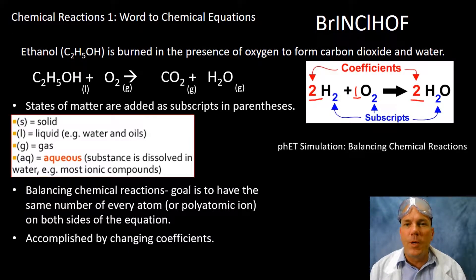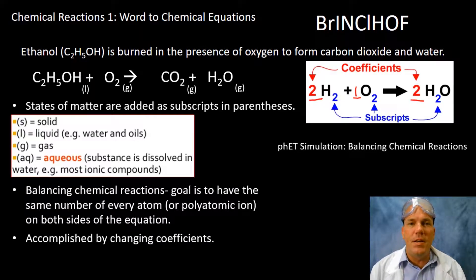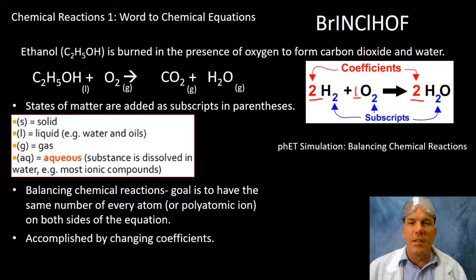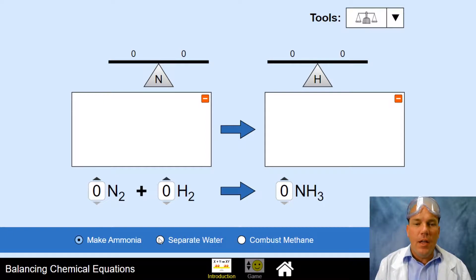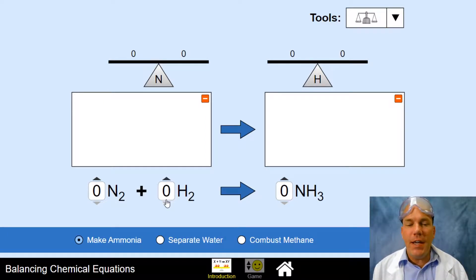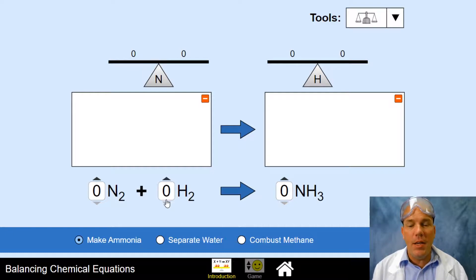I'm going to do a PhET simulation to give you a visual representation of balancing chemical reactions. You can find it online by searching 'PhET simulation balancing chemical reactions.' In the simulation, we have nitrogen gas combining with hydrogen gas — note they are both diatomic — yielding ammonia.